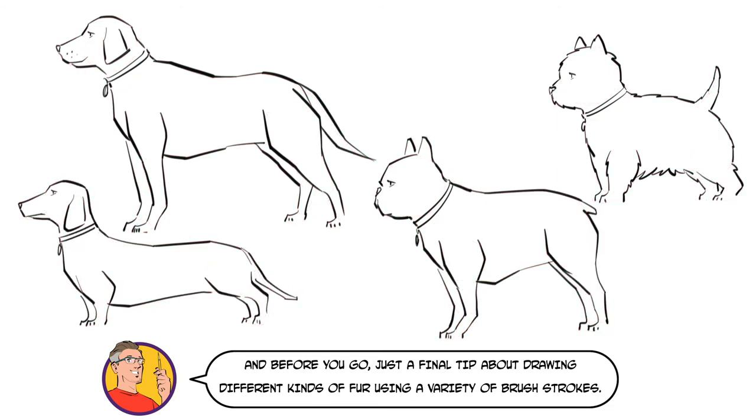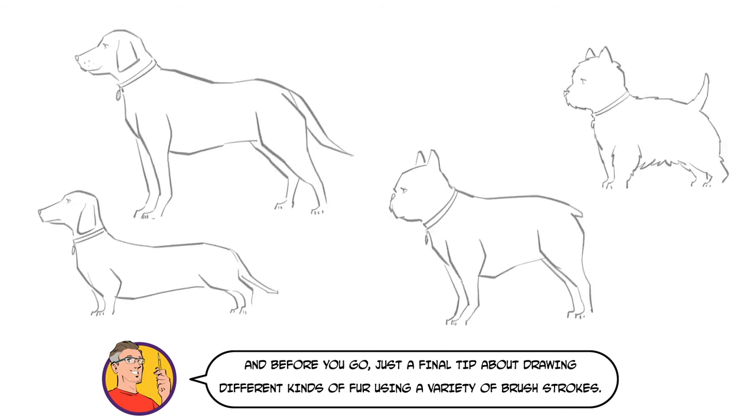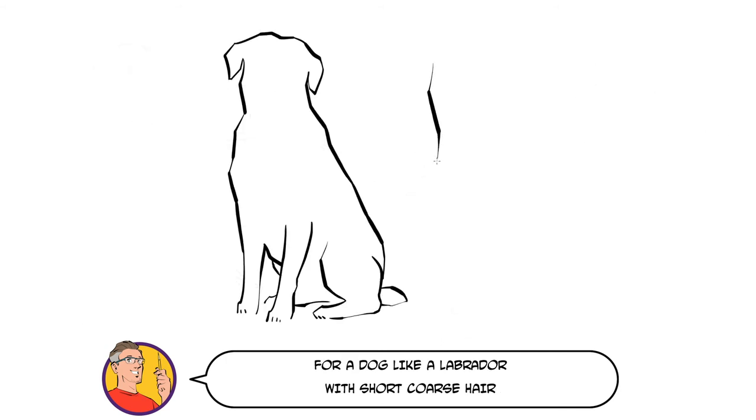And before you go just a final tip about drawing different kinds of fur using a variety of brush strokes. For a dog like a Labrador with short, coarse hair you can get away with just using your regular smooth line.